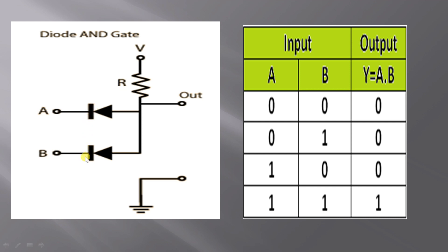This is a diode, and this is another diode. The positive terminals of the diodes are connected to a voltage source through an external resistance R. The negative terminal of the first diode is connected to A and the negative terminal of the second diode is connected to B. Their positive terminals are connected to a voltage source V. The output is taken across the positive terminals of the diodes and the earth.